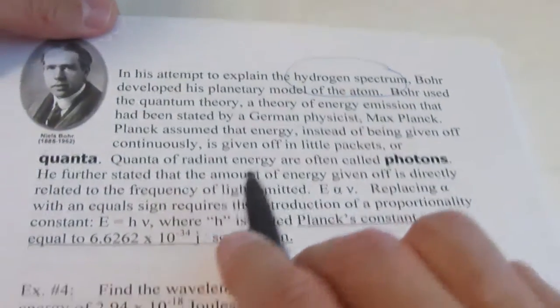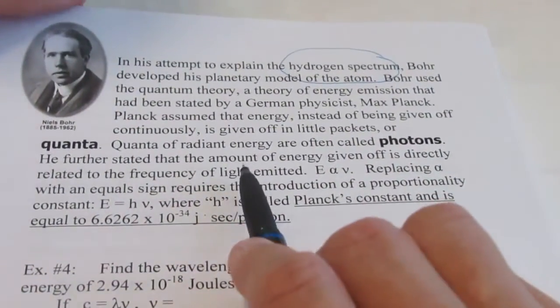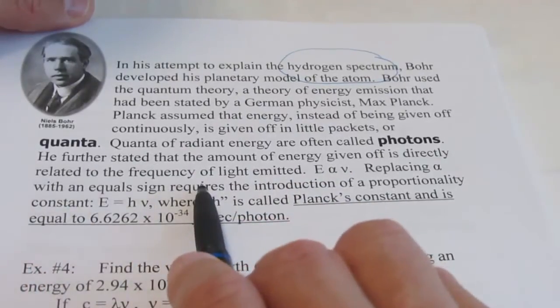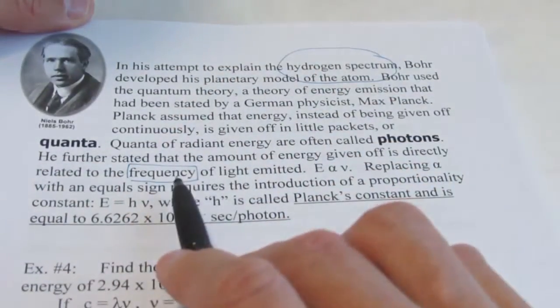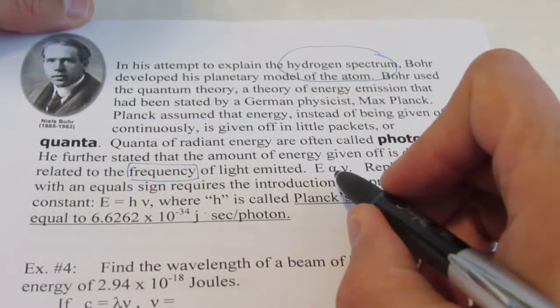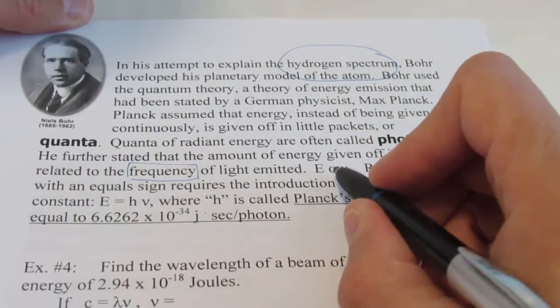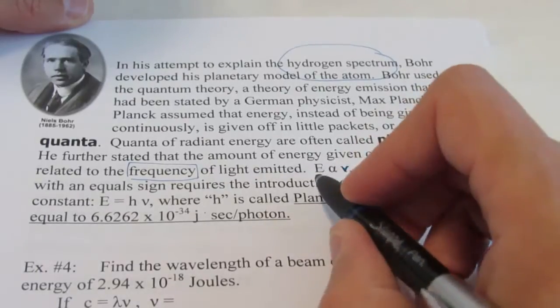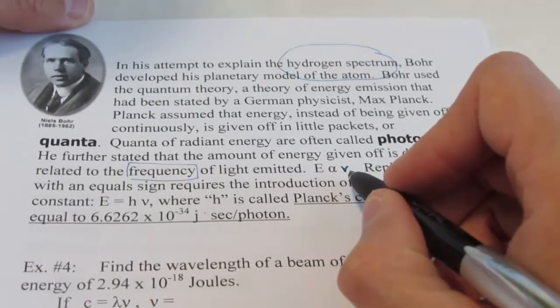Quanta of radiant energy are often called photons. He further stated that the amount of energy given off is directly related to the frequency of the light emitted. Remember frequency from the previous discussions? So energy, and this alpha symbol here stands for is proportional to nu. Remember nu, the Greek letter for frequency. So energy is proportional to the frequency of that light.